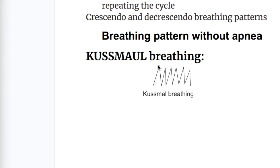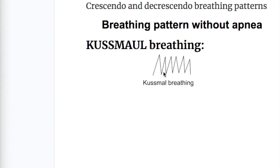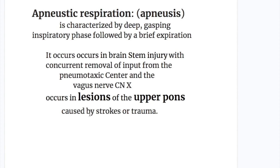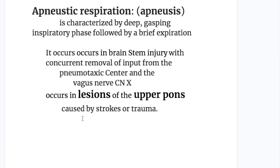Kussmaul breathing is rapid deep breathing found in diabetic ketoacidosis and metabolic acidosis. Apneustic breathing is characterized by a deep gasping inspiratory phase followed by a brief expiration. It occurs in brainstem injury with concurrent removal of inputs from the pneumotaxic center and the vagal nerve, and in lesions of the upper pons caused by stroke or trauma.